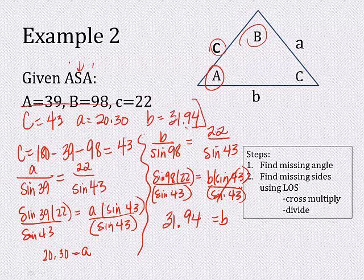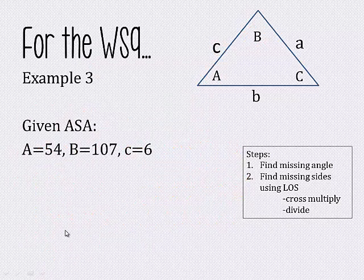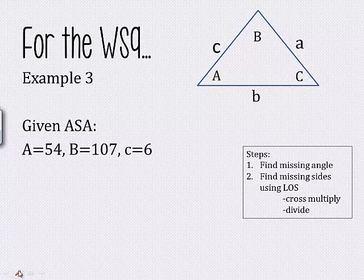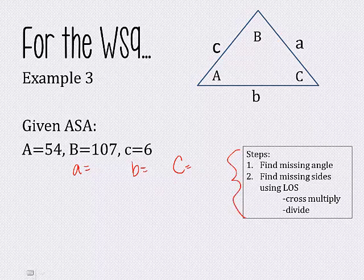Hopefully that makes sense — you're just using sines and those ratios throughout. For practice, try this one: you have two angles and a side — big A, big B, little c. Find the missing parts: little a, little b, and big C. Using these steps, you should be able to get there. Good luck, and we'll see you in class.